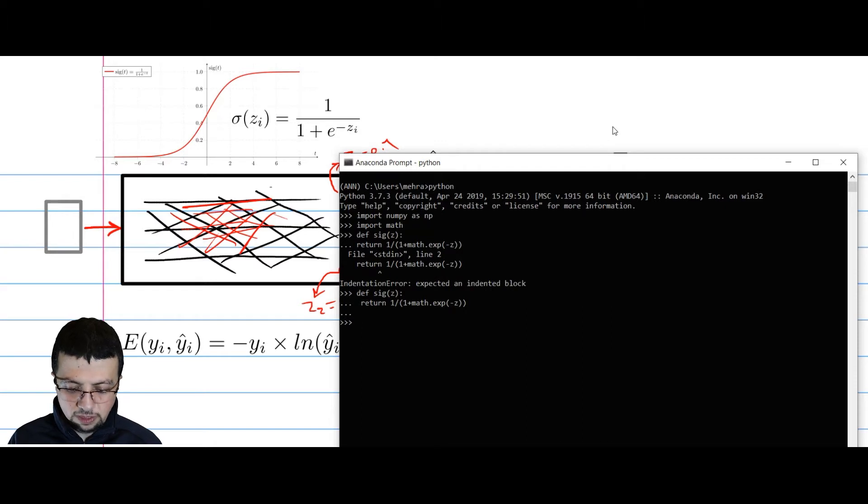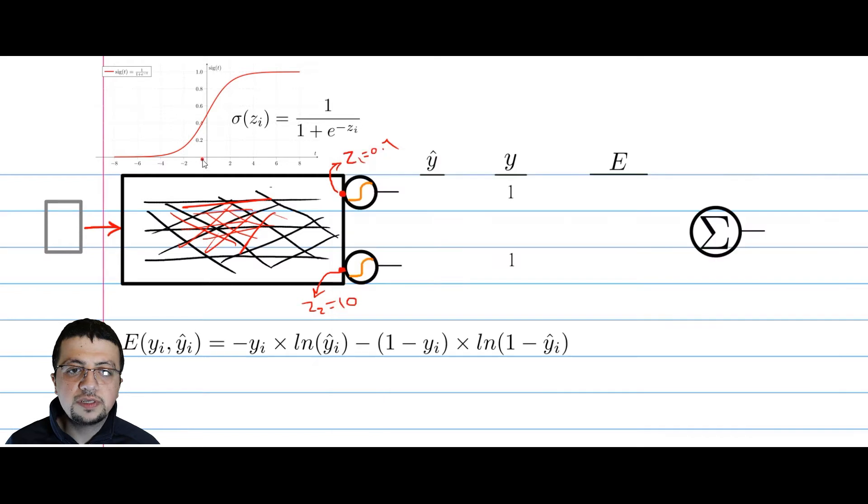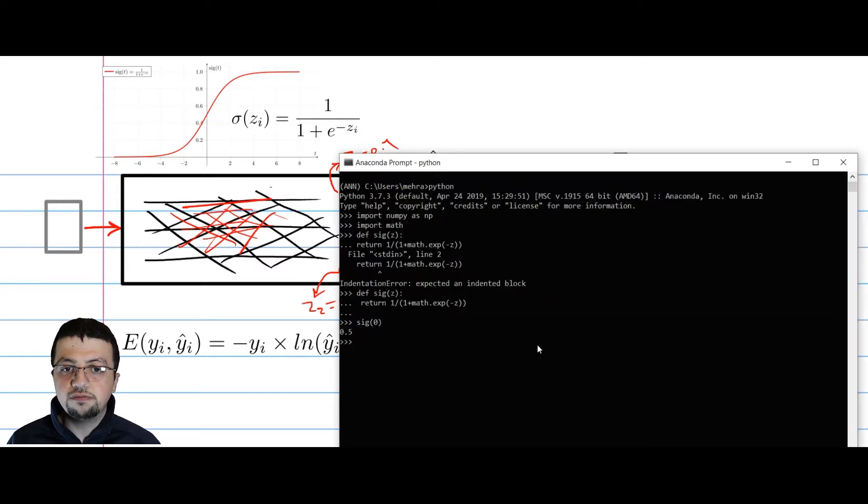Let me just show you what it means to say it crushes stuff. So sigmoid of a value equal to 0 is 0.5, and that makes sense. When your input is around 0, the output is nearly 0.5. And let's say the input is very large, say 100, the output is 1. And let's say it's very small, minus 100, the output is very small, 10 to the power of minus 44. So it's always between sigmoid and 1.